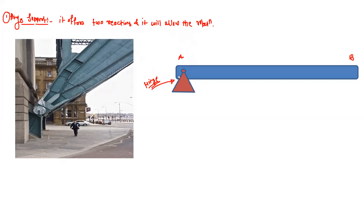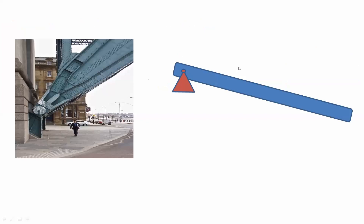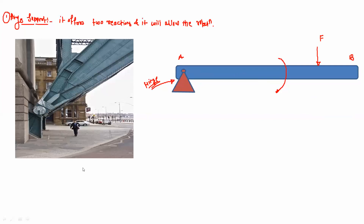The hinge support offers two reactions — one in the vertical direction and one in the horizontal direction — and it will allow rotation. That means if you apply some force on beam AB, this hinge support allows rotation but offers two reactions at the joint: VA in the vertical direction and HA in the horizontal direction.